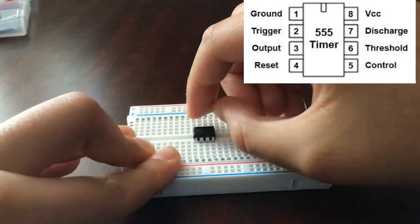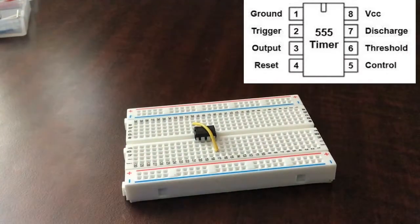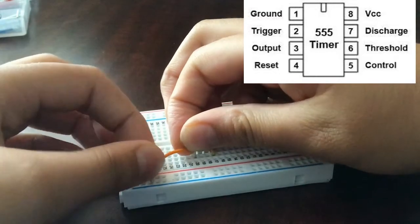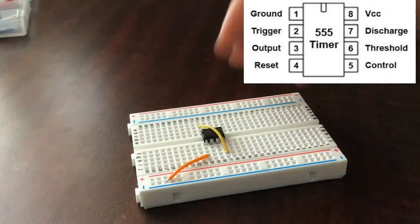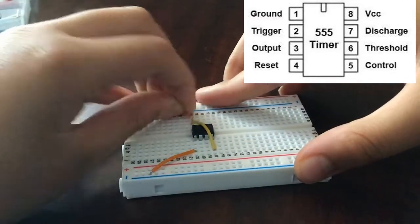First we place our 555 timer IC on the board with the pinouts below. Then we connect pin 4 to pin 8, pin 1 to the negative rail, and pin 8 to the positive rail.